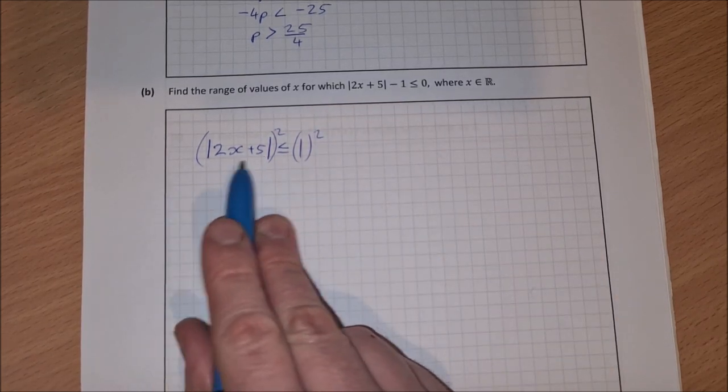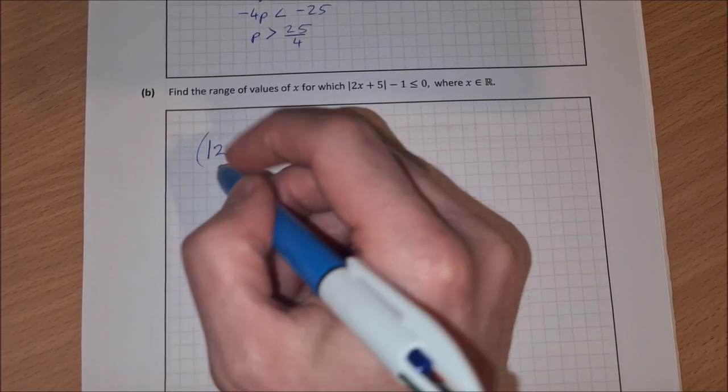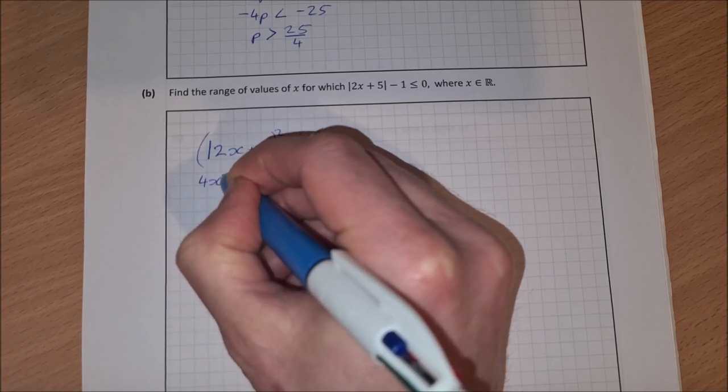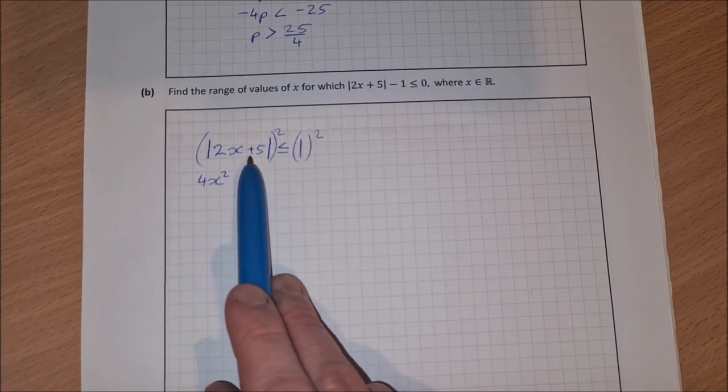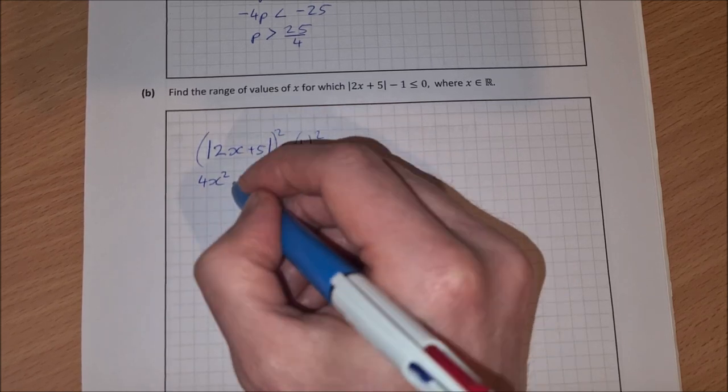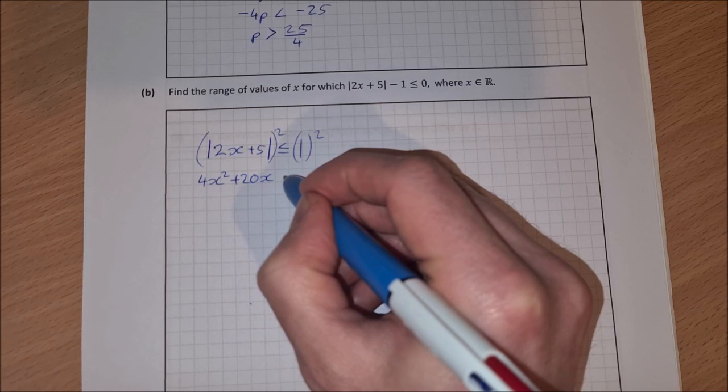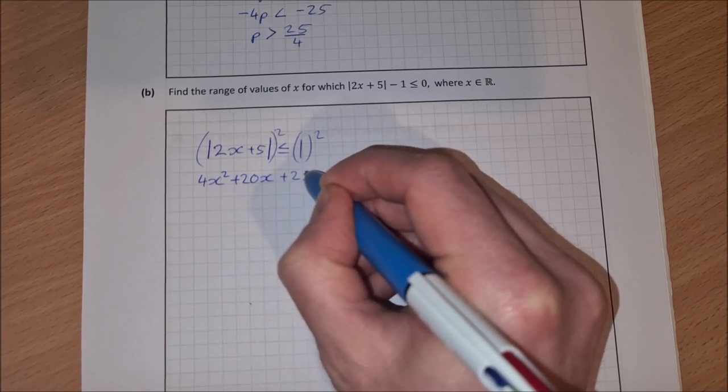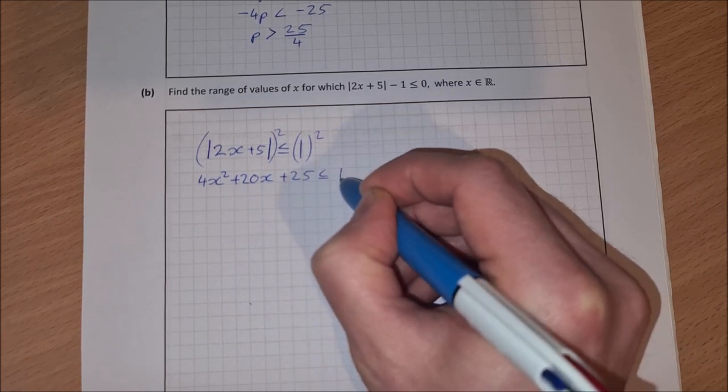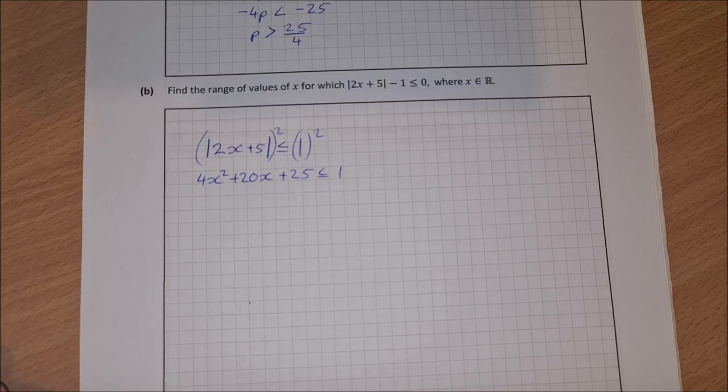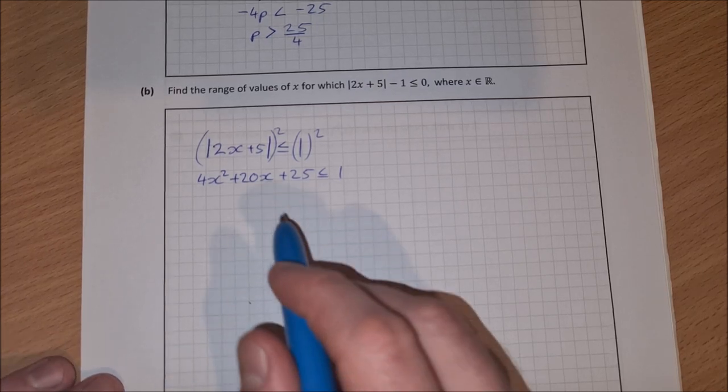So when I square out this absolute value, I'll square the first, that's 4x squared. Twice the product, 2x by 5 is 10x times 2 is 20x. And then 5 by 5 is 25. And that's less than or equal to 1 squared is just 1.